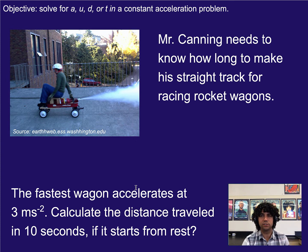So let's practice this real fast. Let's use that equation. Let's pretend I, Mr. Canning, need to know how long to make a straight track for racing rocket wagons, kind of like this wagon right here. The fastest wagon we built accelerates at 3 meters per second squared. We're going to be calculating the distance traveled in 10 seconds if a wagon starts from rest.